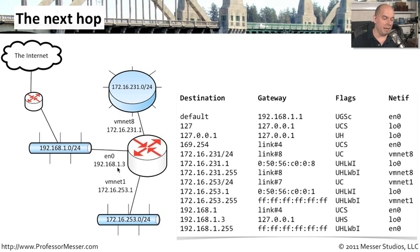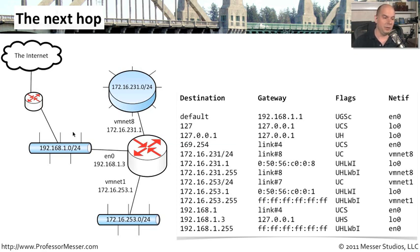The router has IP addresses on these networks as well — 231.1, 1.3, and 253.1. When traffic goes into the router, it has to make a decision about where to send it. Looking at the routing table, the default location — if nothing else applies — is to send it out to 192.168.1.1, which is a different router that is my next hop to the rest of the world. So if I need to communicate to Google, Yahoo, or Microsoft's website, I will always go out to 192.168.1.1 via interface EN0.